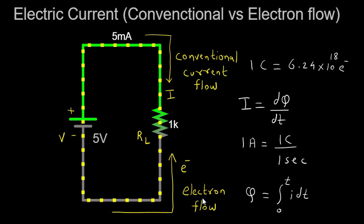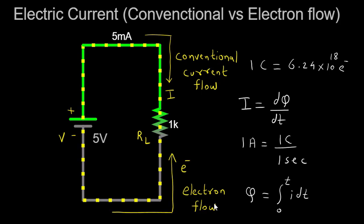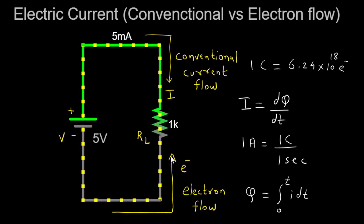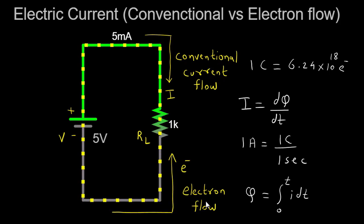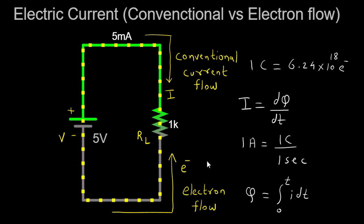Electron flow represents the actual movement of negatively charged electrons, which is from the negative terminal to the positive terminal. To understand electric current more deeply, let's explore the relationship between charge and current.